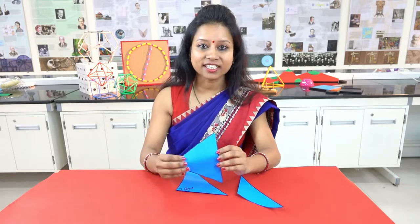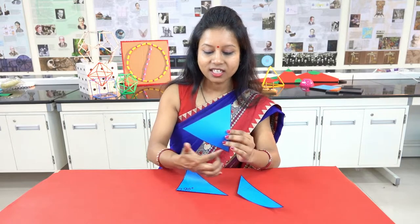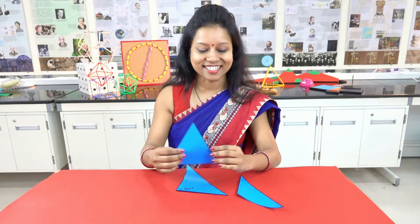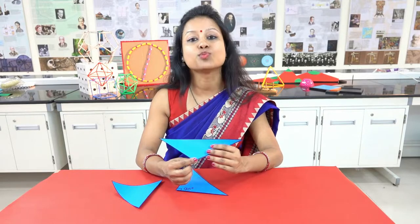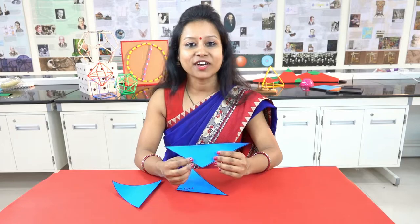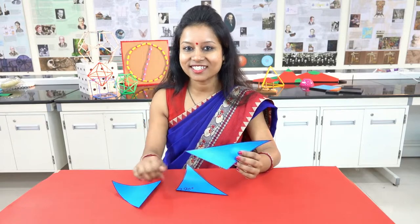We have acute angle triangle wherein all the angles are less than 90 degrees, and we have obtuse angle triangle wherein one of the angles is more than 90 degrees. Let's find out the area of these triangles.